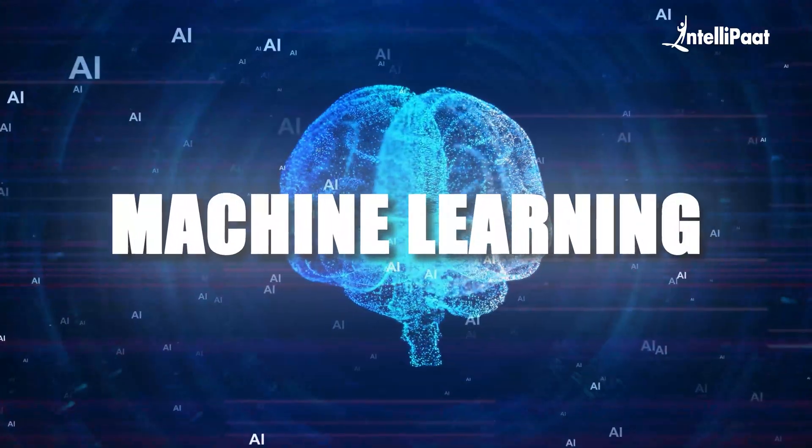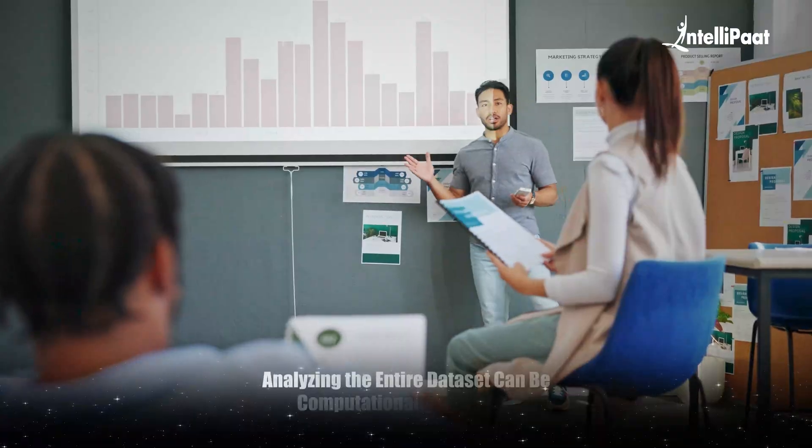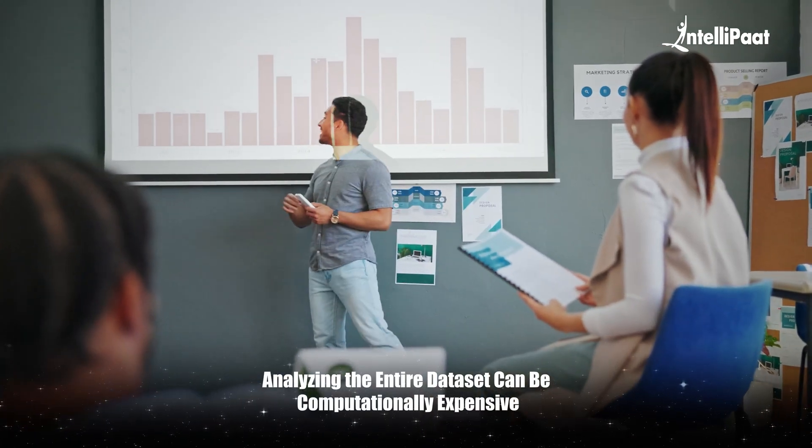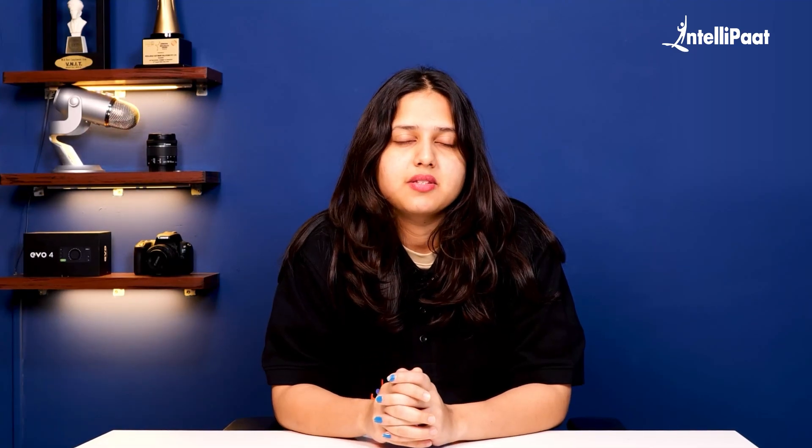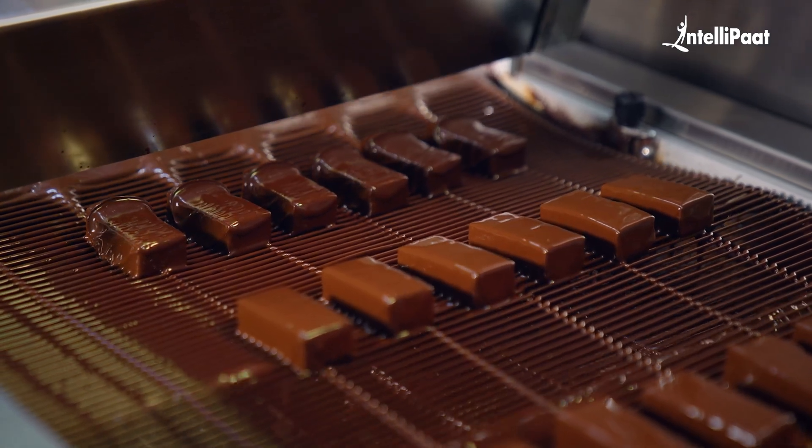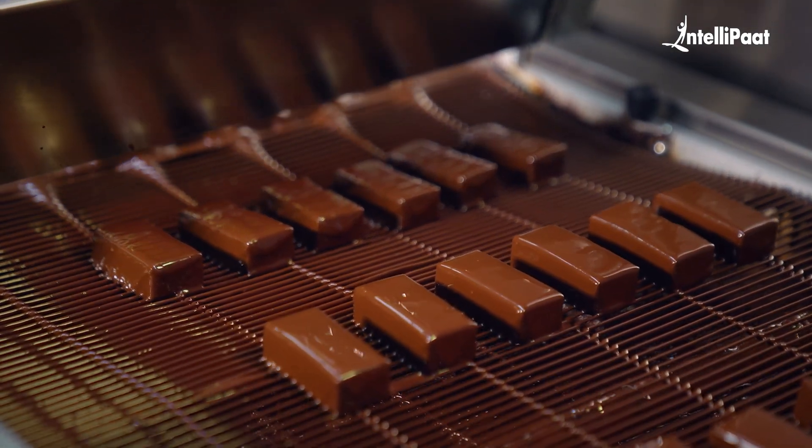In machine learning, we often work with massive datasets. Analyzing the entire dataset can be computationally expensive, so we use sampling techniques to pick smaller, representative subsets. These samples help train models efficiently while still achieving good performance. Think of sampling like checking the quality of a batch of chocolates in a factory.